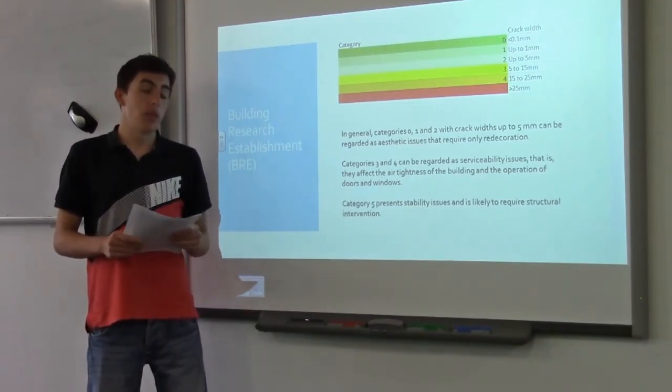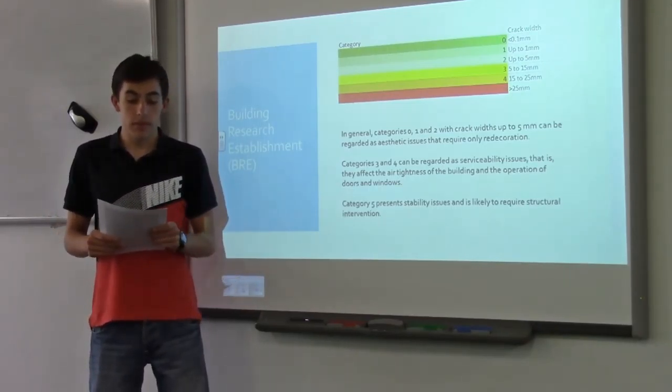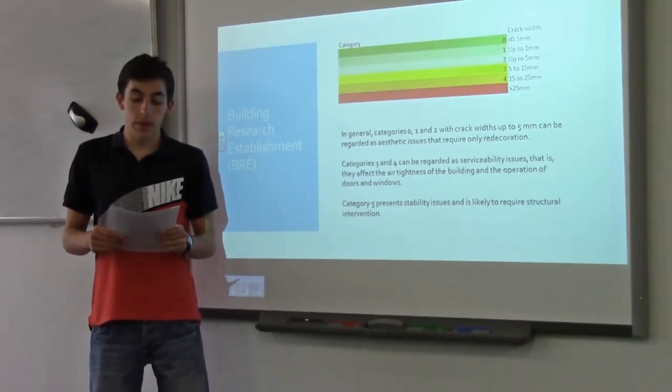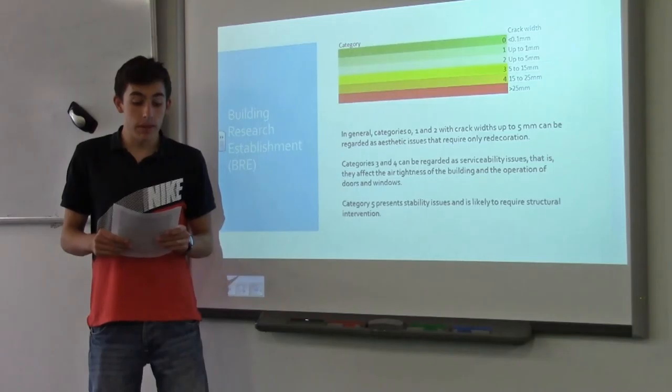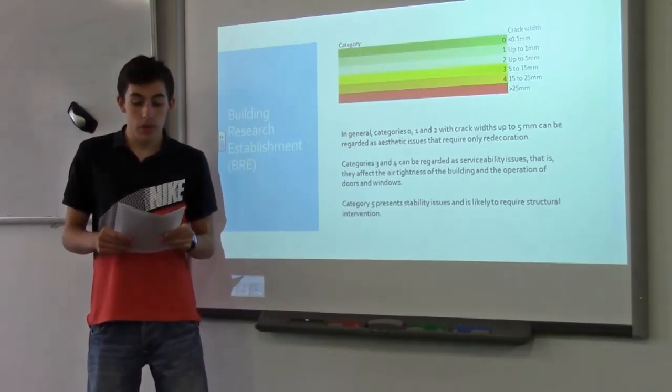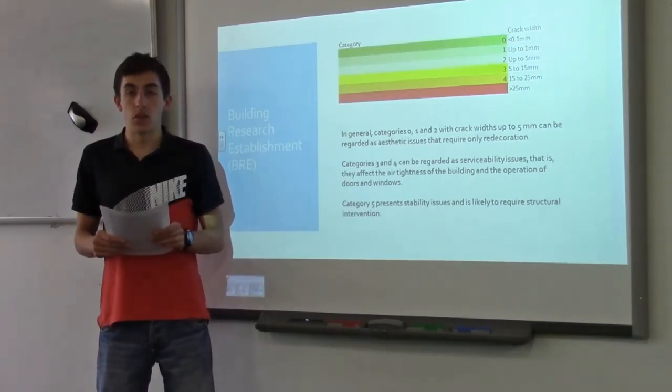And finally Category 5 in which cracks are larger than 25 millimetres. Structural damage that requires a major repair job involving partial or complete rebuilding, beams losing bearing, walls leaning badly and require shoring, windows broken with distortion and dangerous instability.